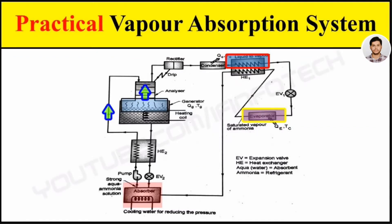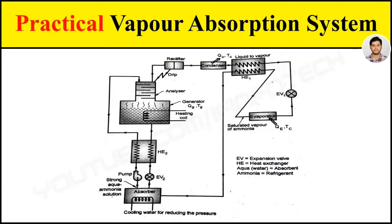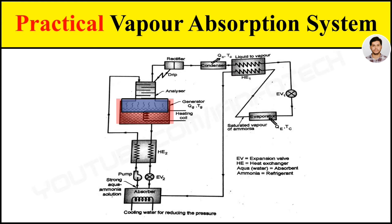Hello everyone. In this video I will show you the working of a practical vapor absorption system, fitted with an analyzer, rectifier, and two heat exchangers. The vapor rises from a strong aqua ammonia solution in the generator where heat is supplied externally. This vapor consists of ammonia vapor with a small quantity of water vapor.